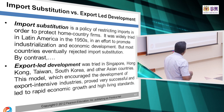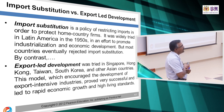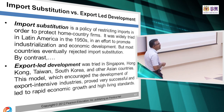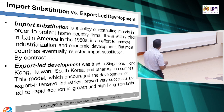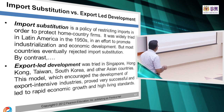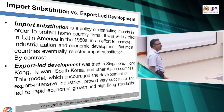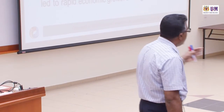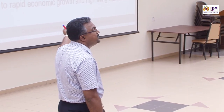Import substitution versus export-led development. Import substitution means a policy that restricts imports in order to protect home country firms. Another approach is export-led development — countries like Singapore, Hong Kong, Taiwan, South Korea, and India are really export intensive. So there are two types of countries: one restricts imports, the other is export intensive.